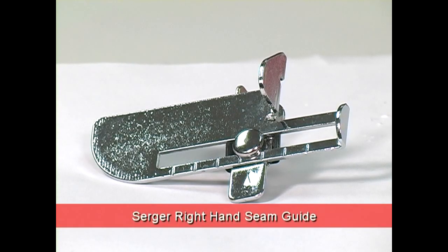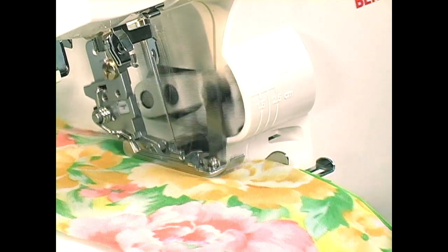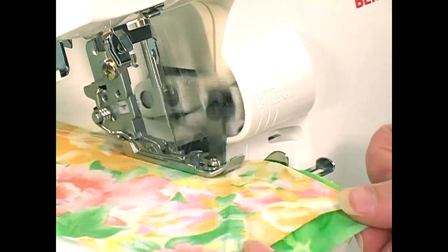The right-hand seam guide provides an aid in guiding fabric to maintain a precise seam allowance. Move the guide to the right or the left for the desired seam allowance. The right-hand seam guide attaches in front of the lower cutting blade. Loosen the screw and slide the guide over the small black post. Tighten the screw once the guide is in place. Some models require the use of an attachment base to secure the seam guide in place. Move the guide to the desired seam allowance. Place the edge of the fabric against the edge of the guide and serge.